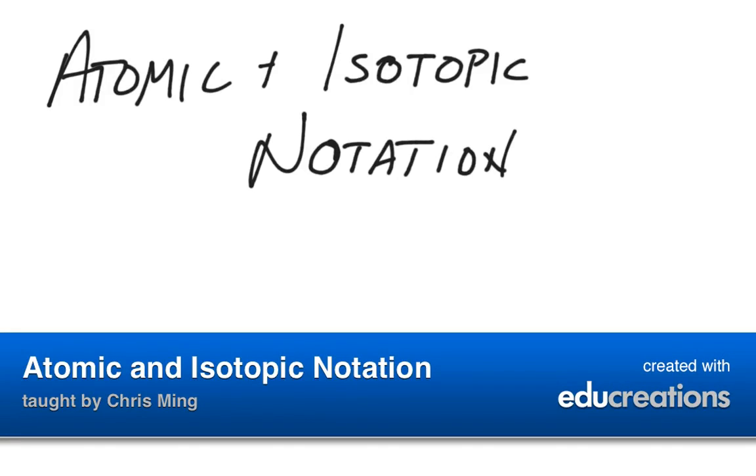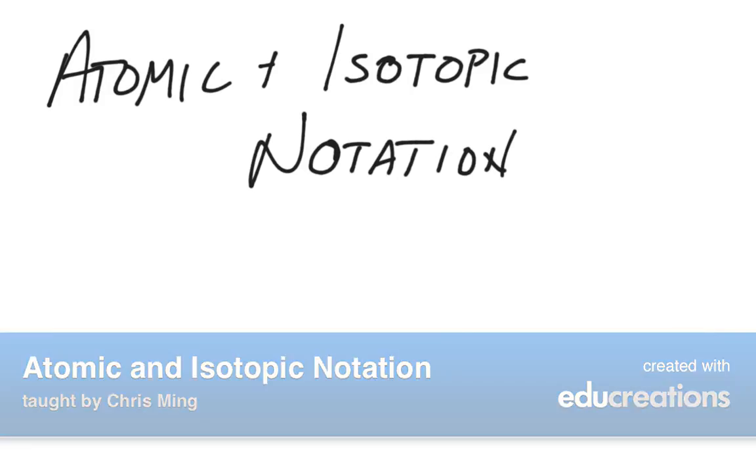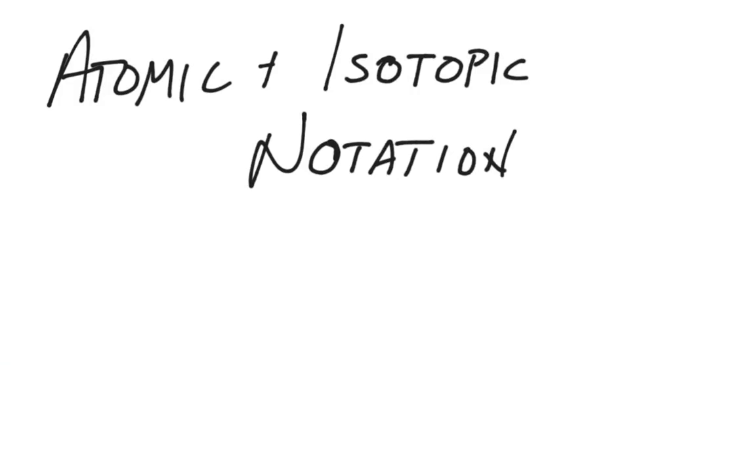Atomic and isotopic notation is the way that we write out an element. We actually use a series of symbols to write that out. In any given circumstance, you could be given the elemental symbol. For example, K. K tells you some very important things, but it doesn't give you everything that you need to know.